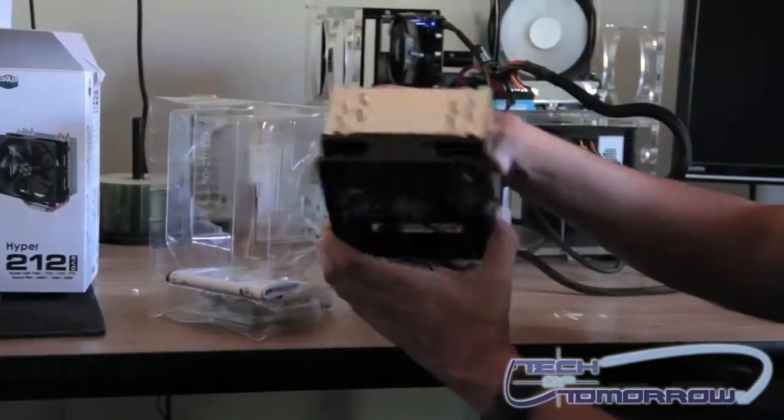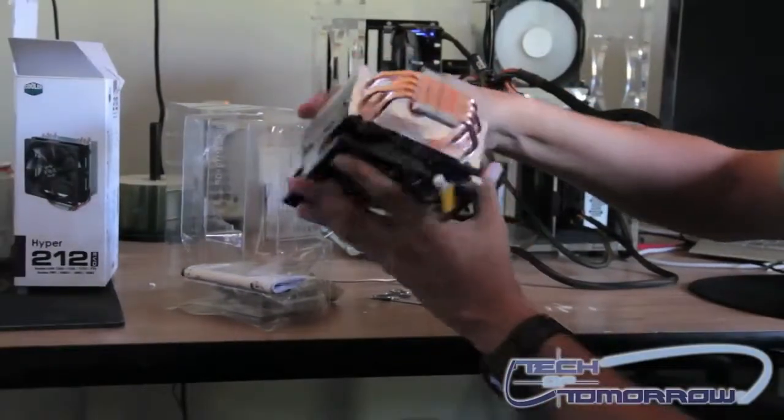So, that's it there. You've got four direct touch heat pipes, copper heat pipes, in an aluminum base with aluminum fins.